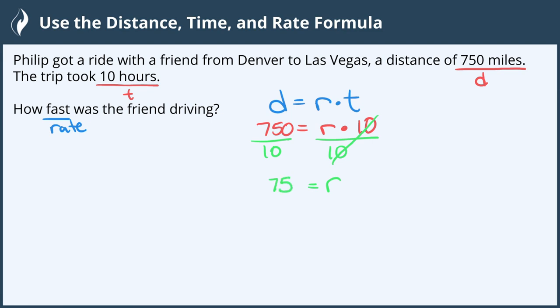We also need to know the units because distance is being measured in miles and time is measured in hours. This means that the rate is 75 miles per hour and now we're all done.